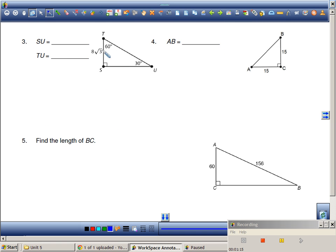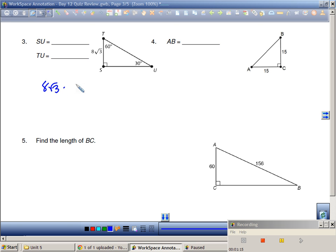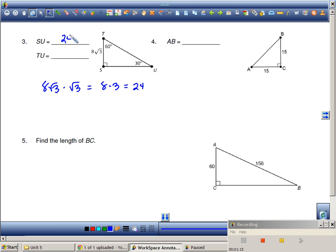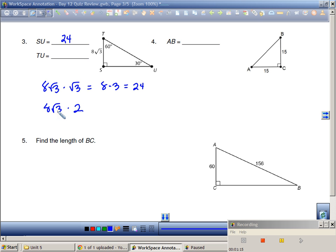Number 3. This is a short leg going to a long leg, so I know I'm going to have to multiply. So 8√3 times √3 is actually 8 times 3, which is 24. So SU is 24. And I know 8√3 going into the hypotenuse is going to be larger times 2. I don't multiply underneath the radical sign by 2, I multiply outside of the radical sign by 2. So that's going to be 16√3.